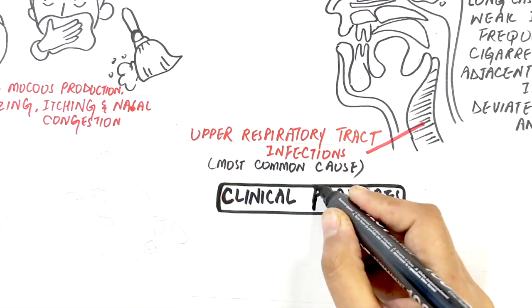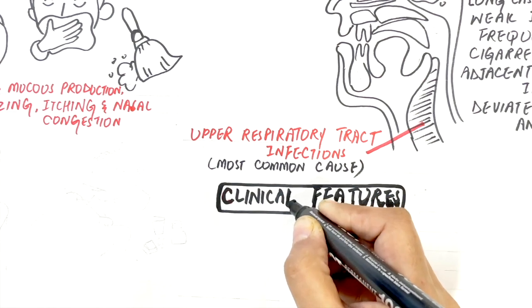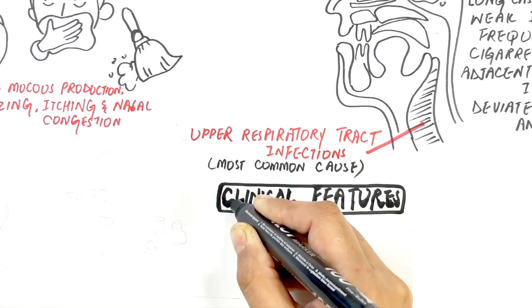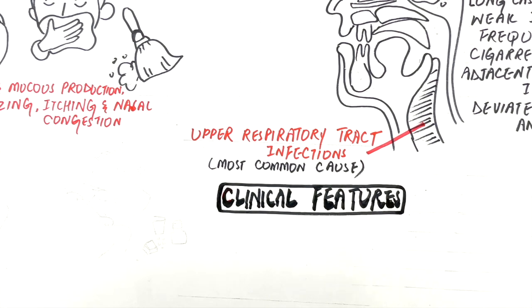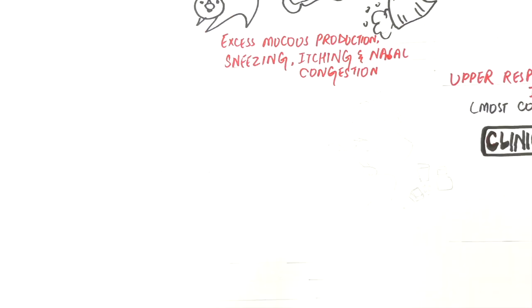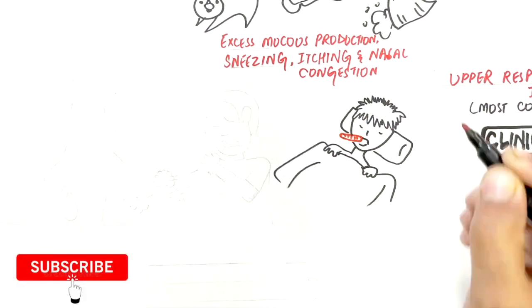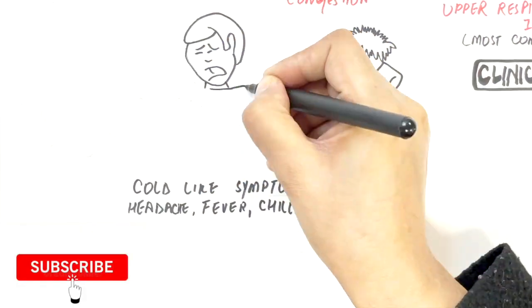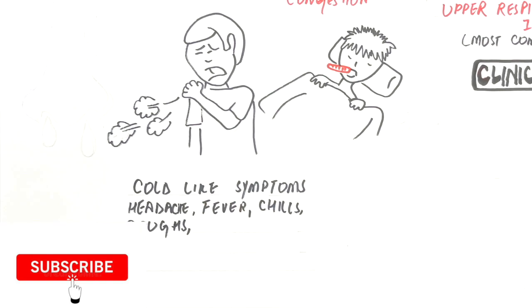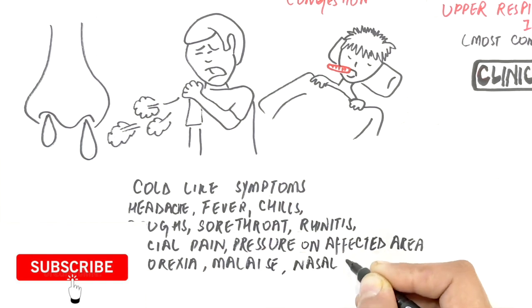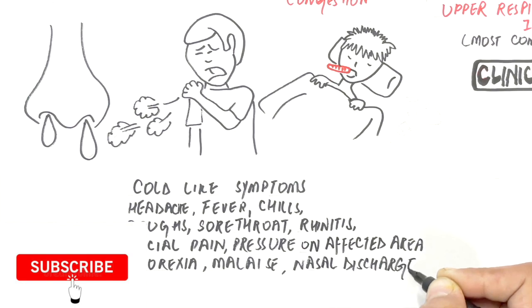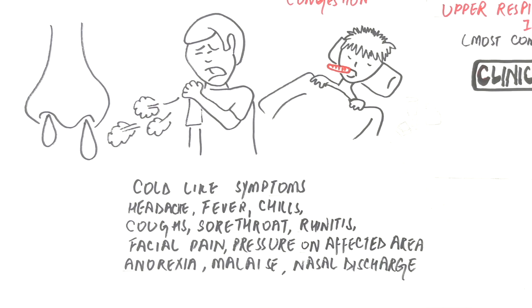The most commonly involved sinuses are the maxillary and ethmoidal sinuses. Patients with acute sinusitis usually have cold-like symptoms including headache, fever, chills, cough, sore throat, rhinitis, and facial pain and pressure on the affected area. Anorexia, photophobia, and malaise with anterior or posterior nasal discharge are also observed.